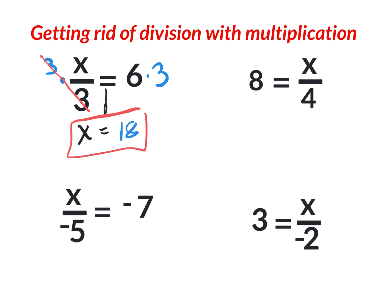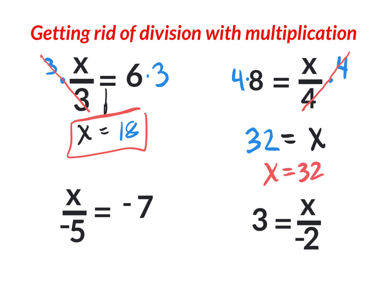It doesn't matter if x is on the left or the right side — you want to get it by itself. Here x is on the right side and there's a divided by four. To get rid of divided by four, do the opposite: multiply by four. Write it up on top so you have a four on top divided by a four on the bottom, which equals one. You're left with just x. Multiply by four on the other side: four times eight is thirty-two. The answer is x equals thirty-two.